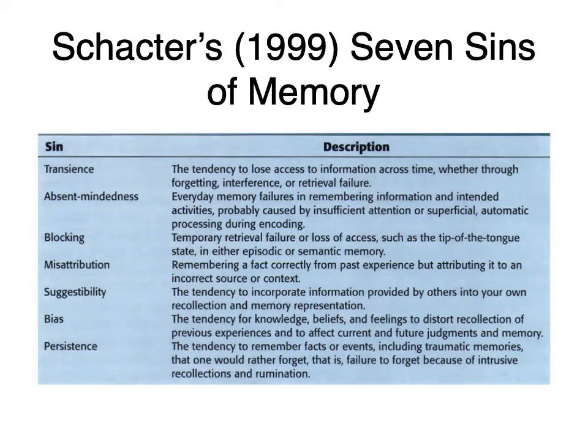He also lists absent-mindedness — everyday memory failures in remembering information and intended activities, probably caused by insufficient attention or superficial automatic processing during encoding. Transience has to do with stuff that isn't being used and fades, as opposed to absent-mindedness, where you're not paying attention and it doesn't get encoded.